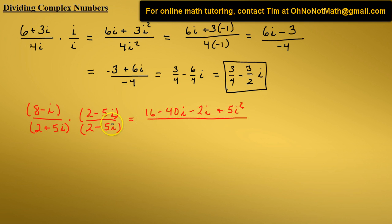And then negative i times negative 5i is positive 5i squared. Now let's do the denominator. We have 2 times 2 is 4. 2 times negative 5i is negative 10i. 5i times 2 is positive 10i.